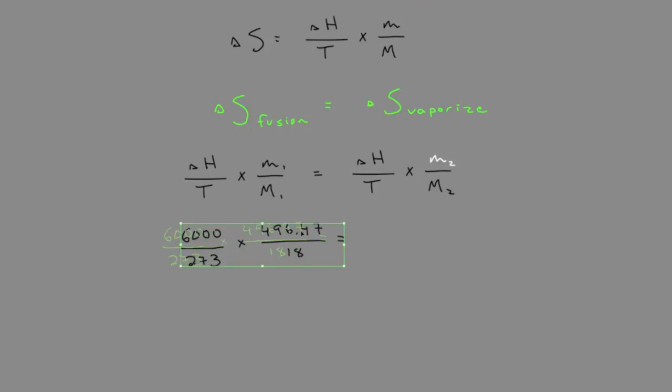We'll set this equal to the right-hand side. We're given the enthalpy of vaporization of water. And the temperature we use has to be the temperature for this phase change. So the vaporization of water occurs at 100 degrees Celsius, or 373 Kelvin.